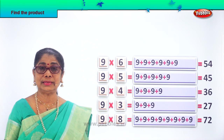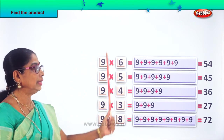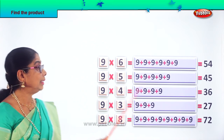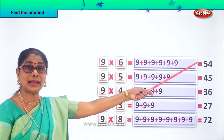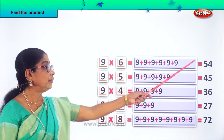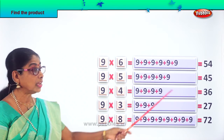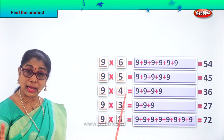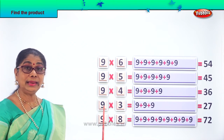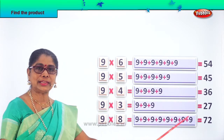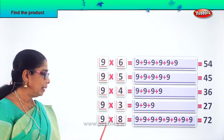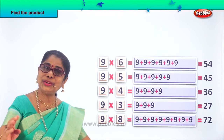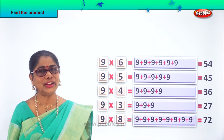Look at the answers — we found the product of these numbers using repeated addition: 9 sixes are 54, 9 fives are 45, 9 fours are 36, 9 threes are 27, and 9 eights are 72. Did you enjoy the exercise?